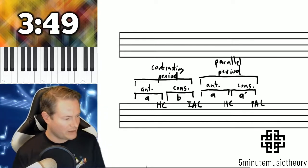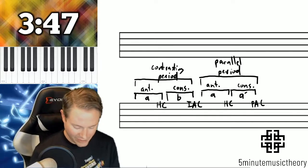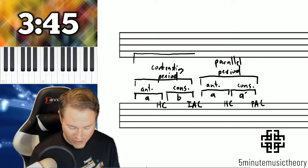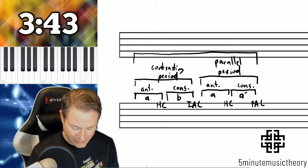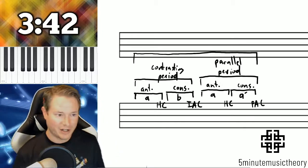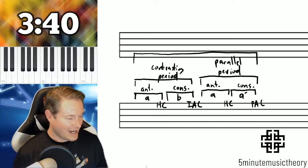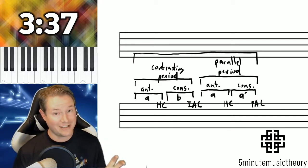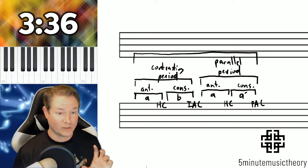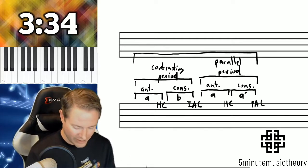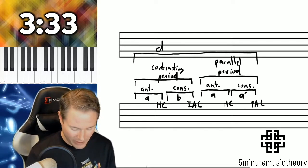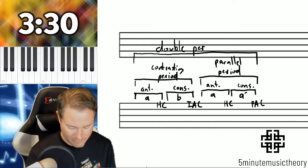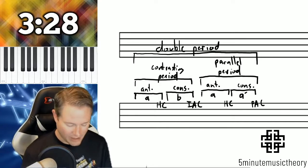So we have one period followed by another. We can actually put this all underneath one umbrella. And when you have two periods together, which have an antecedent and consequent relationship, we're looking at what's called a double period, which is very common, by the way.